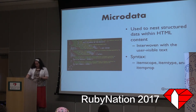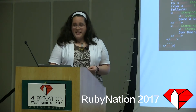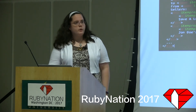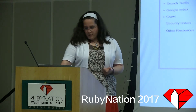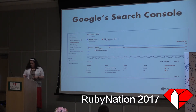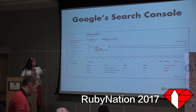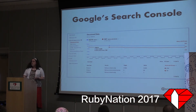Once I familiarized myself with our microdata and learned where we defined it in our views, the next step was to find out what errors we had — and for that I turned to Google's Search Console. Google's Search Console is a free service offered by Google that helps you monitor and maintain your site's presence in their search rankings. There are many things you can do and track with this Search Console, but for the purposes of finding errors, the structured data section under search appearance is most helpful.